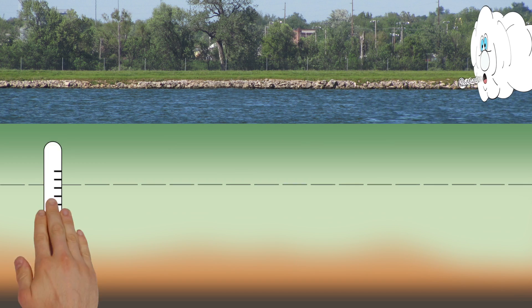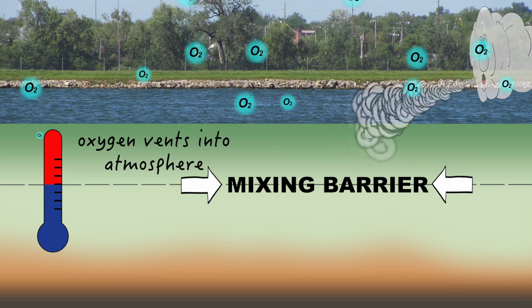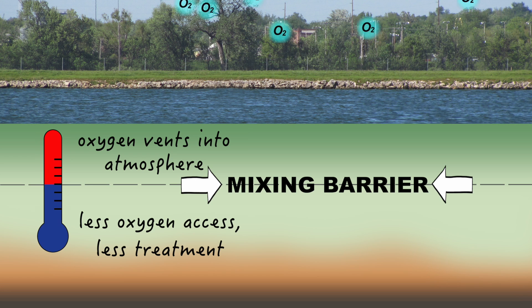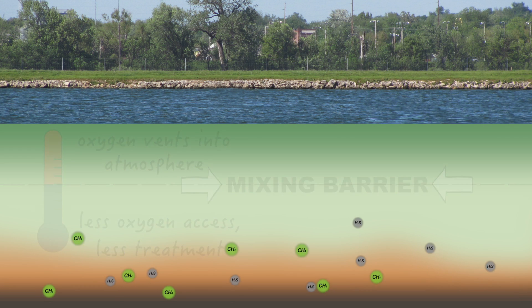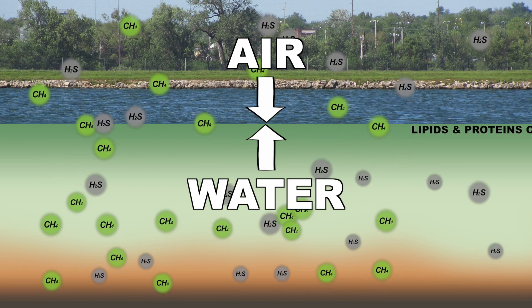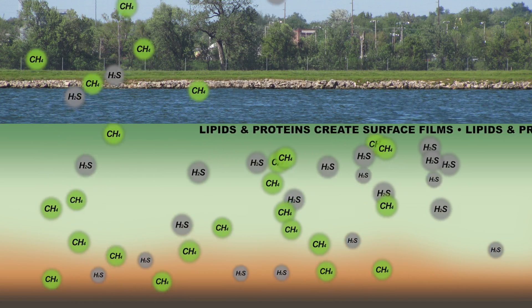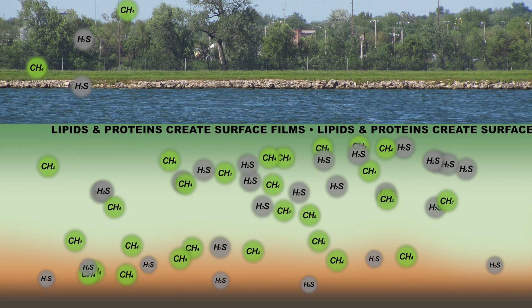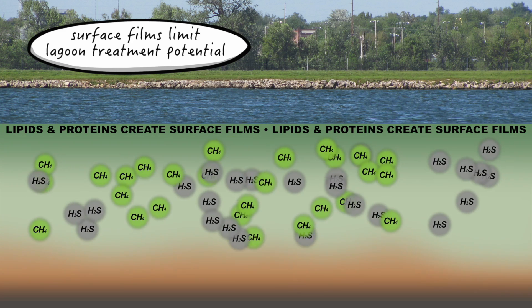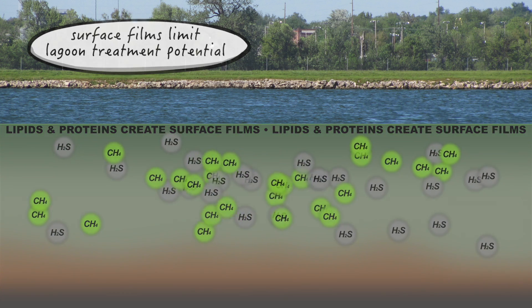Since temperature stratification acts as a significant barrier to natural mixing, much of the supersaturated dissolved oxygen is lost to the atmosphere instead of being used for beneficial digestion and treatment. Another important consideration involves the water-air interface. Lipid and protein films can form on the water surface to create a formidable gas transfer lid between the entirety of the water column and the atmosphere, keeping in undesirable compounds such as H2S and methane from venting out of the lagoon into the open air, thus having a negative effect on the overall health of the lagoon.